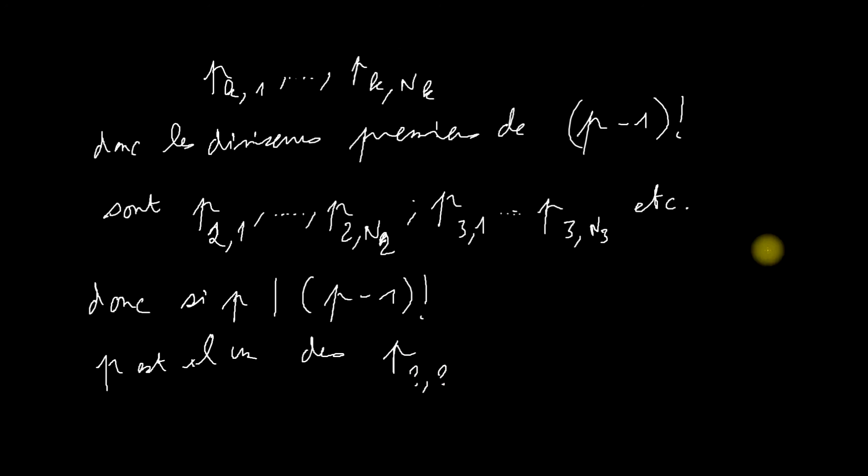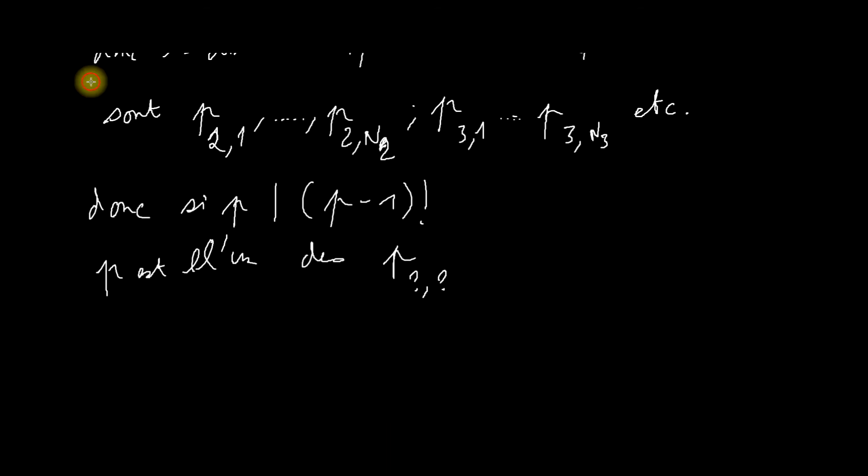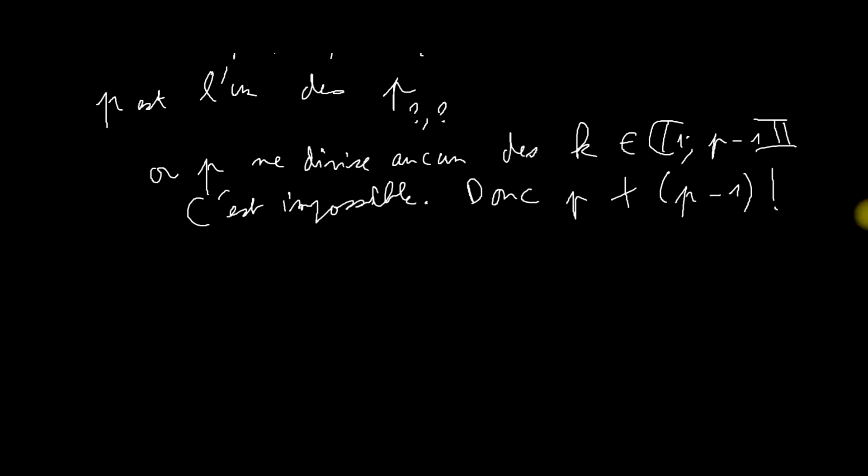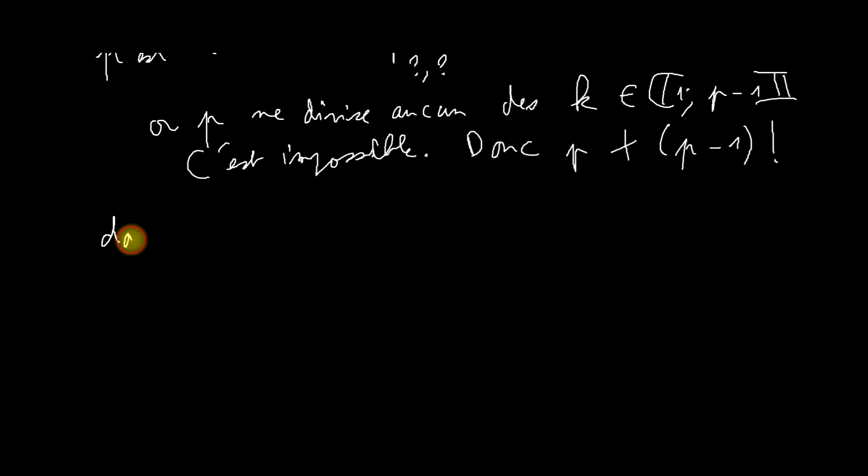Et bien, ça veut dire qu'il est un des P, quelque chose, quelque chose. Mais ça, ça veut dire qu'il divise l'un des K. Or, il ne peut pas diviser aucun des K. Puisqu'ils sont tous plus petits que P moins 1. C'est impossible. Donc P ne divise pas P moins 1 factoriel. C'est une petite preuve par l'absurde. Conclusion.